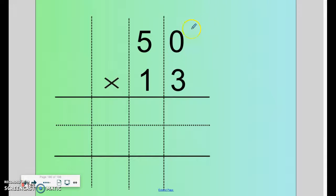This next problem is 50 times 13, which has a 0. We still multiply just as we did before.